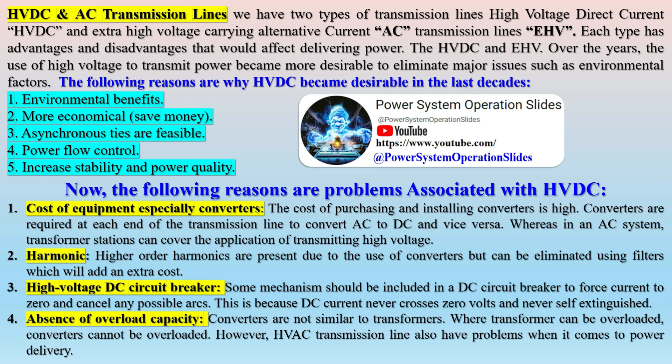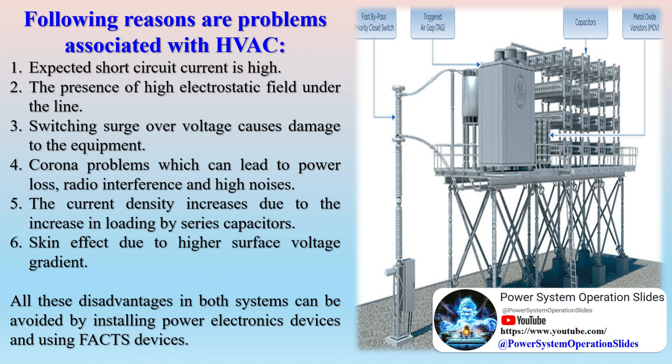Additional advantages include increased quality of supply for sensitive industries and environmental benefits. FACTS incorporates power electronics and controllers to enhance power system controllability and increase transfer capability. Broadly, the flexible AC transmission system can be classified into two main categories: the voltage source converter (VSC) type devices, which are the most commonly used FACTS devices, and the variable impedance devices. Each type has a different suitable controller based on the application.